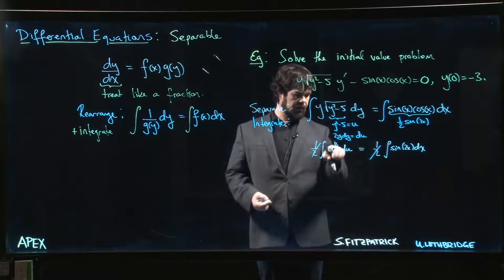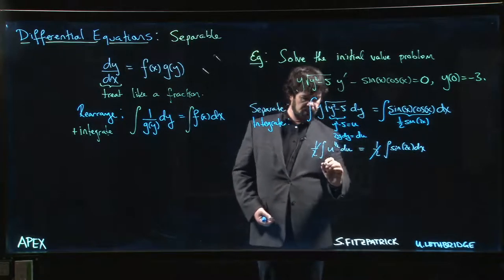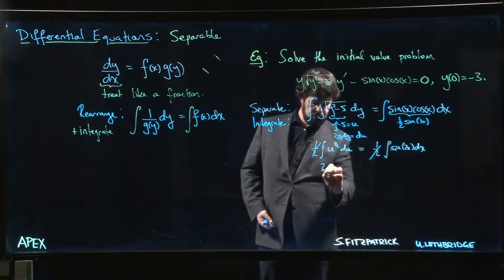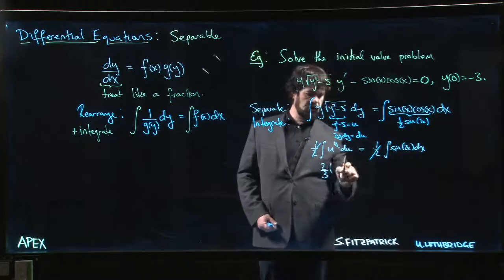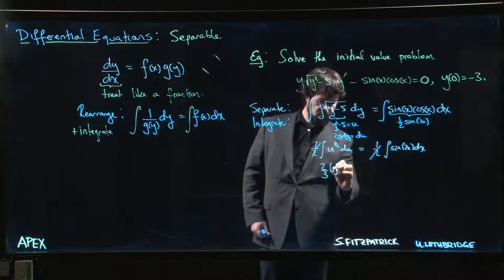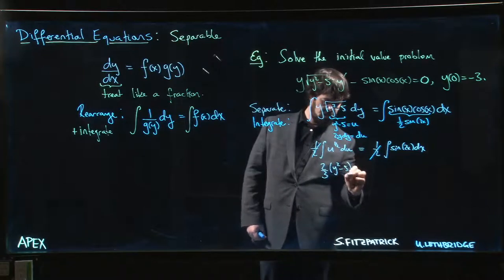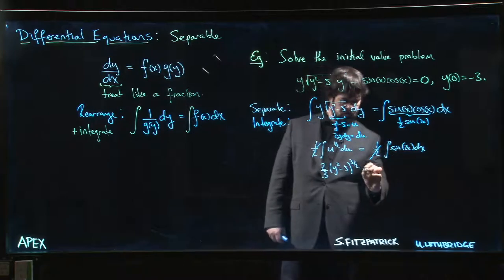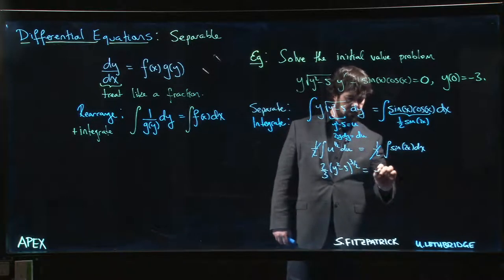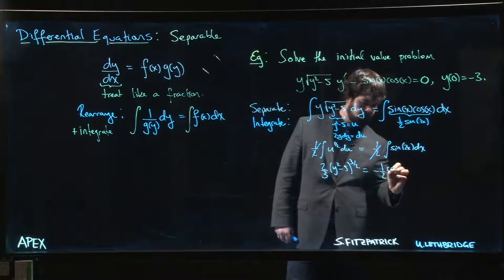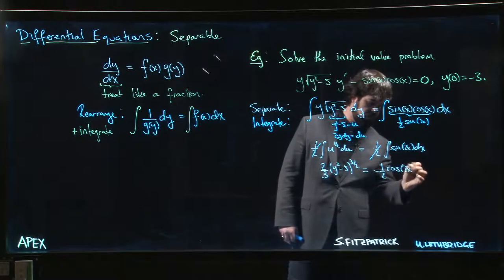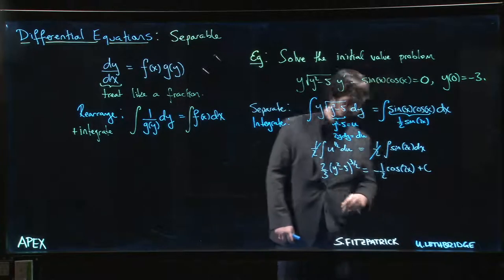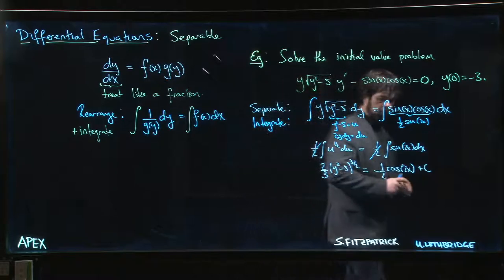So here power rule says we add one, we get u to the three halves, we divide by the exponent, so two thirds u to the three over two. But let's put what u is: u is y squared minus five, power three over two. On this side I'm going to get minus one half cos 2x plus c.